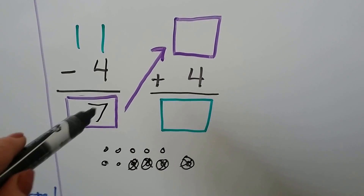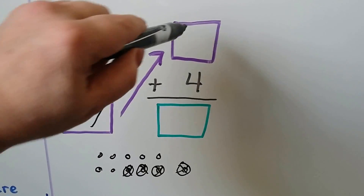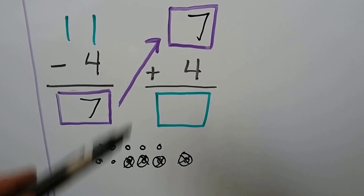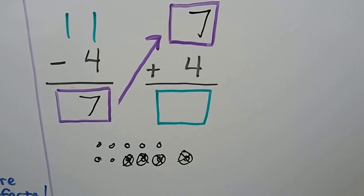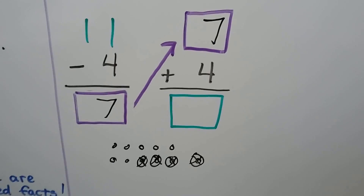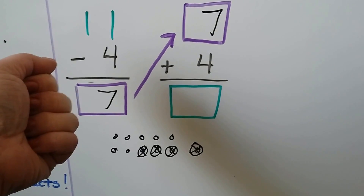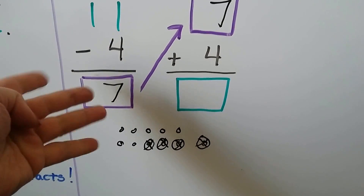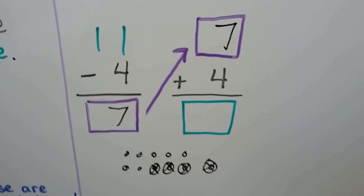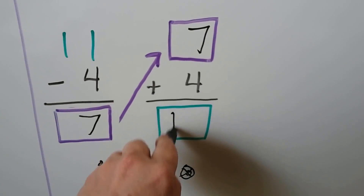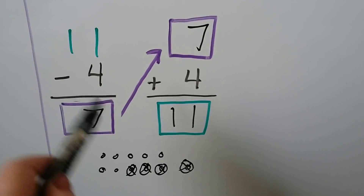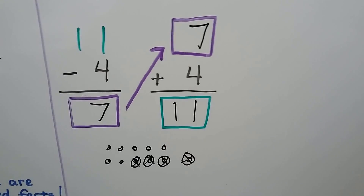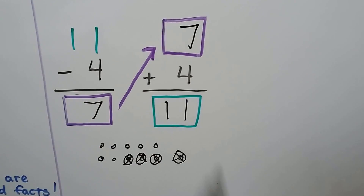The difference is going to be the addend so we can check it. We add seven plus four. Using count on, starting with the larger addend seven: seven, eight, nine, ten, eleven. Yes, it is eleven. Our sum is eleven — the same as the minuend — so we know we did our subtraction correctly, and we checked it with addition.